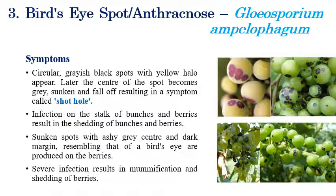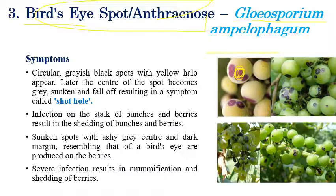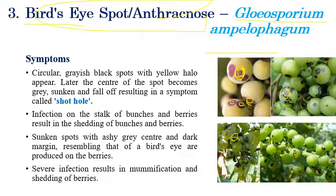Next is bud eye spot, also called anthracnose — a very important disease in grapes caused by Gloeosporium ampelophagum. The name itself indicates bud eye spot, as the spots look like a bud eye. We can see brown color discoloration on fruits along with a yellow halo. The most important symptom is the shothole symptom. Brown color discoloration along with the yellow halo and shothole symptom are the key diagnostic features.